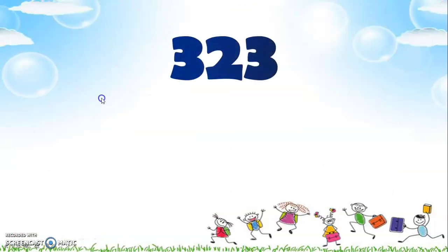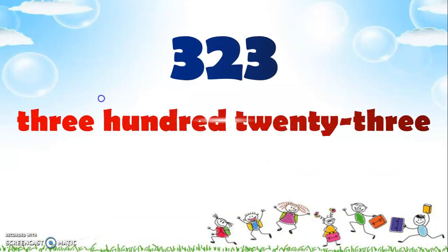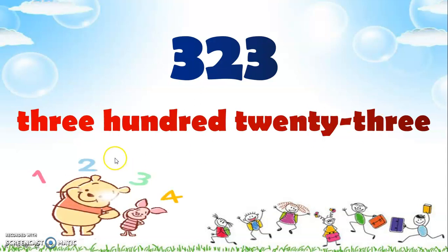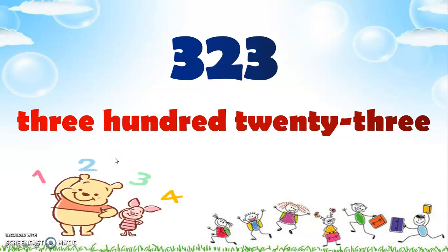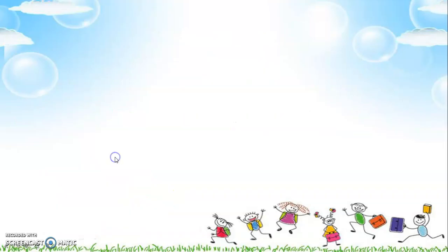Three hundred twenty-three — we can spell it this way: three hundred twenty-three, and there's a dash between twenty and three.